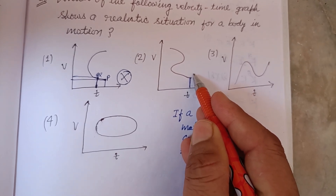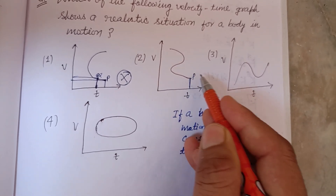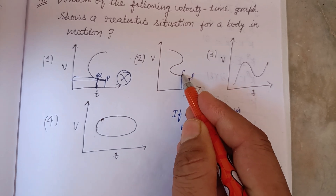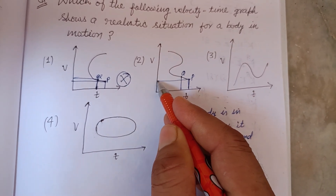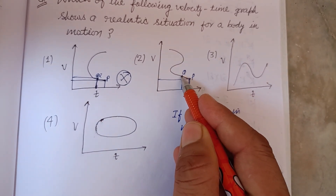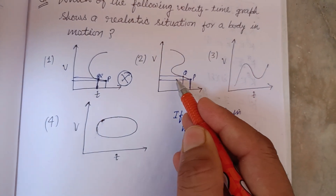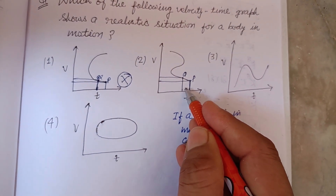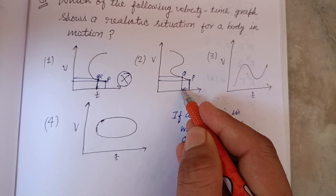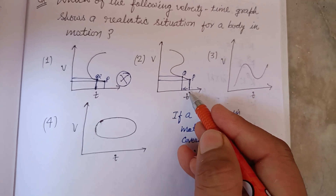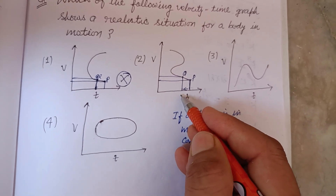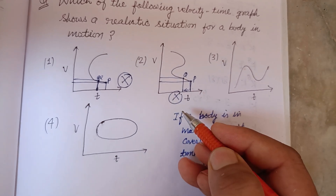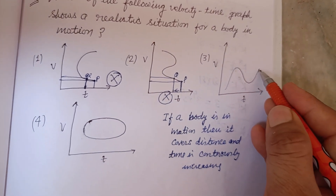In the second figure, at point P and point Q, the velocity is increasing but time is decreasing. A body can be in motion, but time decreasing is not possible, so this graph is also not realistic.